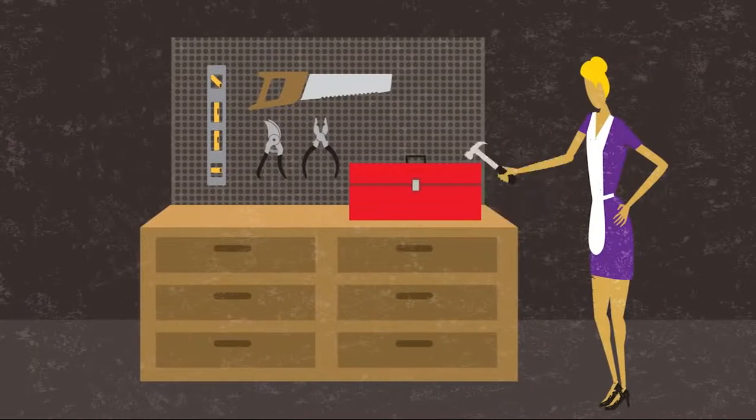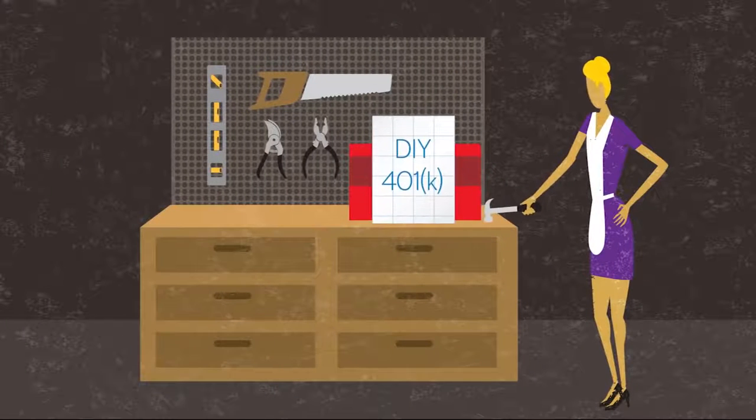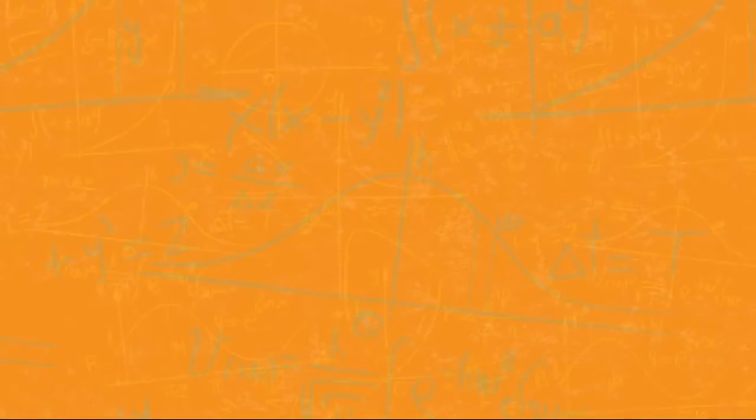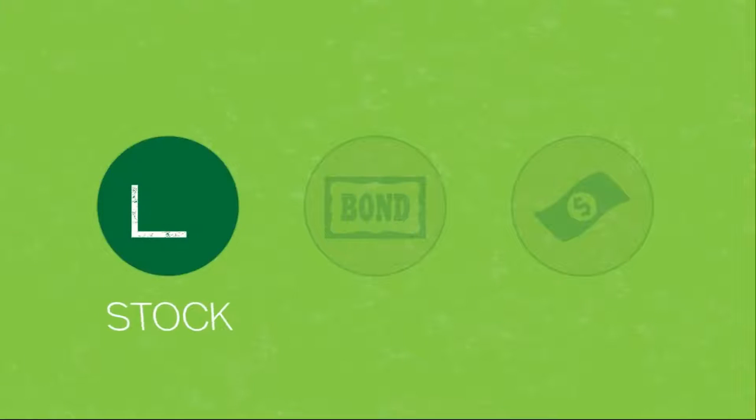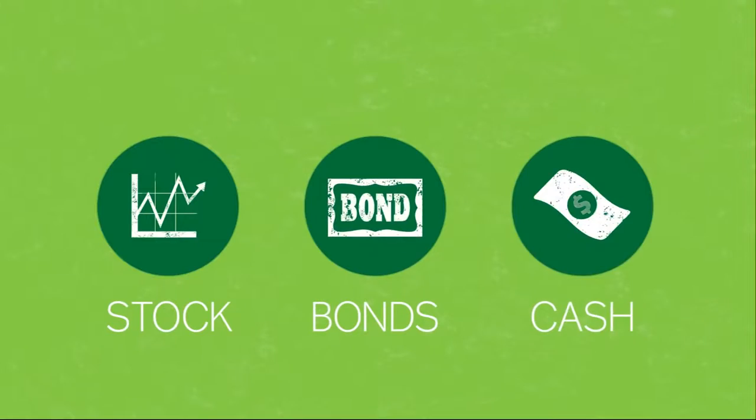And if you're the do-it-yourself type, you need to understand how to invest appropriately. Don't worry, we're not going to show you tons of math. All you need to know to get started is that there are three big types of investments called asset classes: stock, bonds, and cash.